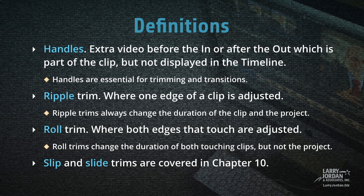Handles are essential for trimming and transitions. A ripple trim is where one edge of a clip is adjusted; ripple trims always change the duration of the clip and the project. A roll trim is where both edges that touch — both the in and the out — are adjusted in opposite directions. Roll trims change the duration of both touching clips, but not the project. Slip and slide trims are covered in Chapter 10.